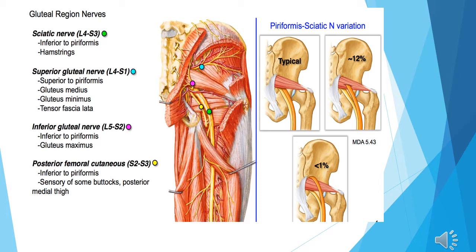The superior gluteal nerve supplies the gluteus medius and gluteus minimus muscles. The inferior gluteal nerve supplies the gluteus maximus muscle.